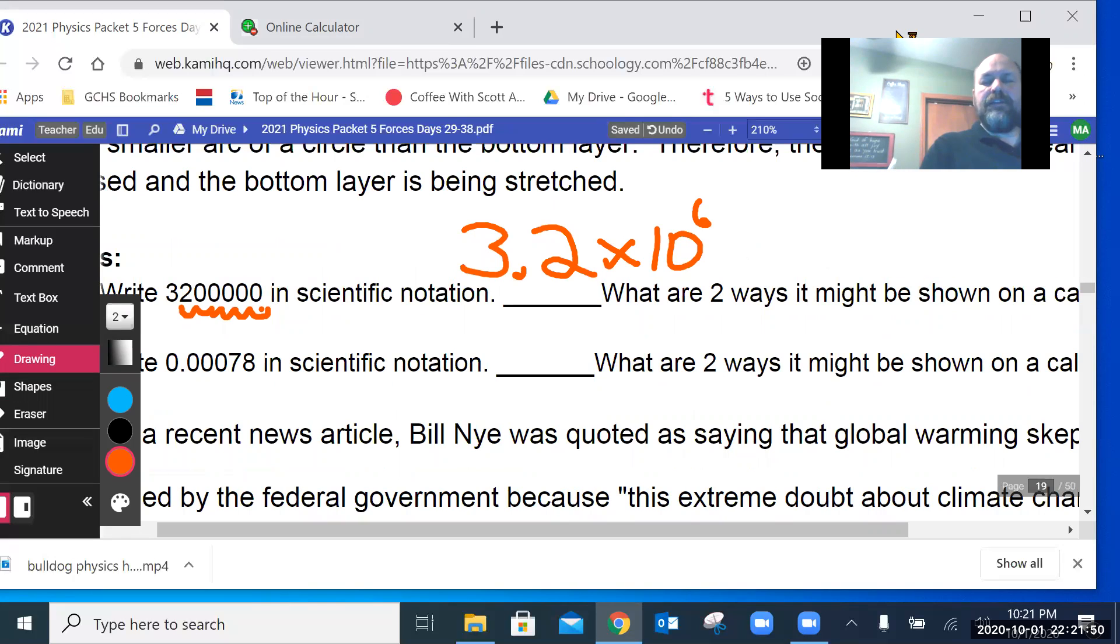On a calculator, this might be shown as 3.2e6 or just 3.2 with a space and then six.